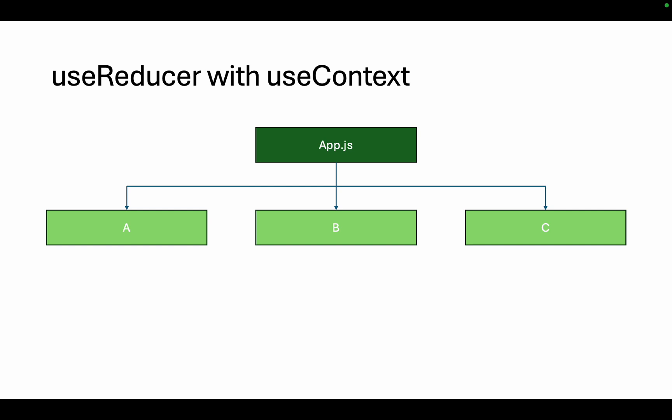For example, I have an application with a root-level app.js file and there are three components available inside app.js — component A, B, and C. In this example we had implemented a counter between all three components. Component A has a counter, component B also has a counter, and component C also has a counter. In that scenario we will be using useReducer hook in each component and maintaining the state locally inside these components.